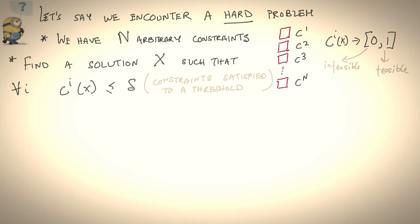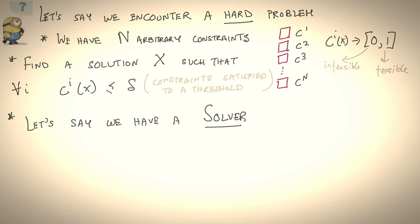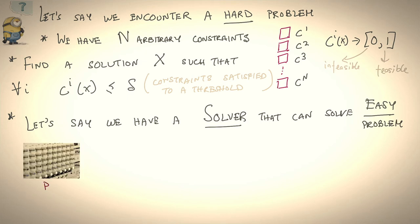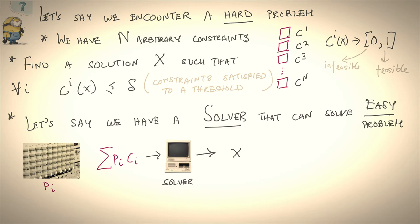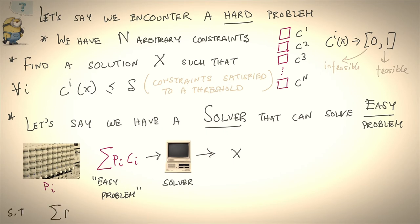There's a common theme across all these domains that makes GWM attractive. Let's understand this abstractly. Say we encounter a hard problem with a set of n arbitrary constraints. Think of each constraint as a function c_i — you have c_1, c_2, c_3, up to c_n — where c_i maps x from 0 to 1, where 0 means the constraint is infeasible and 1 means it's feasible, indicating the degree of infeasibility. The goal is to find a solution x such that for all i, c_i(x) is less than delta — constraints approximately satisfied up to a threshold.